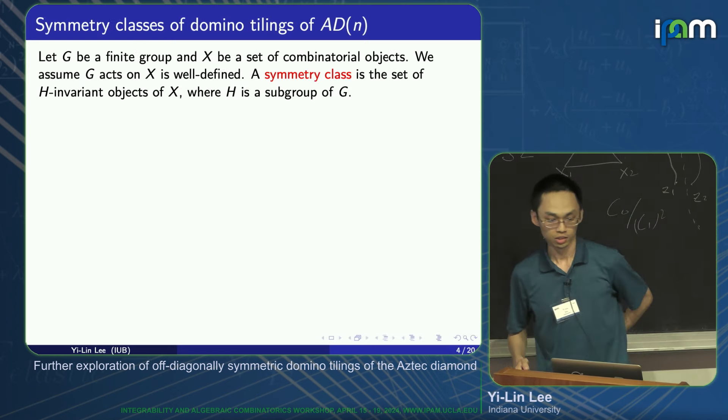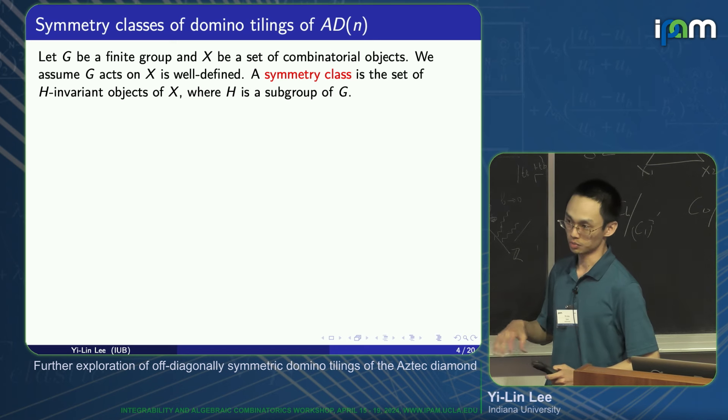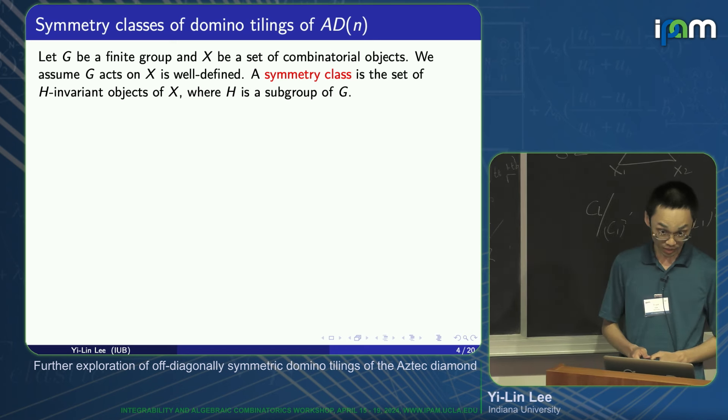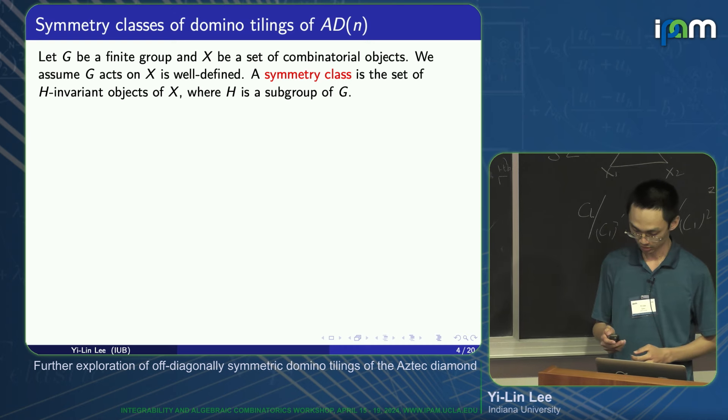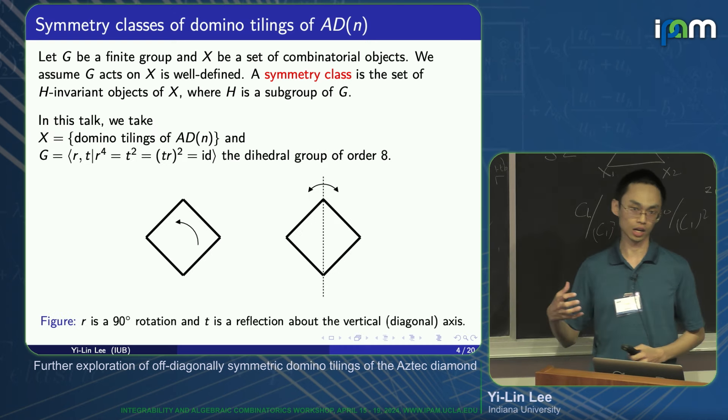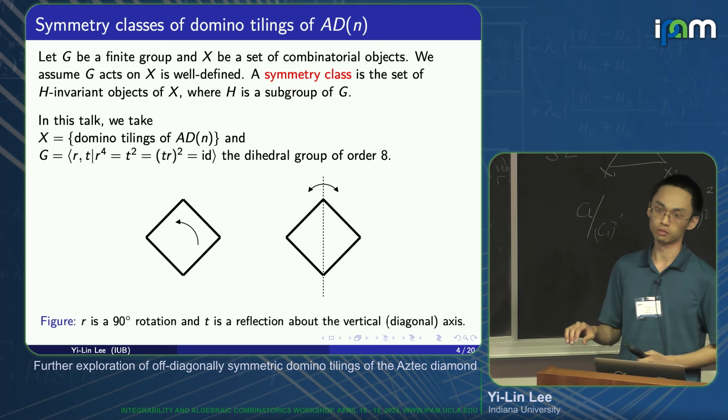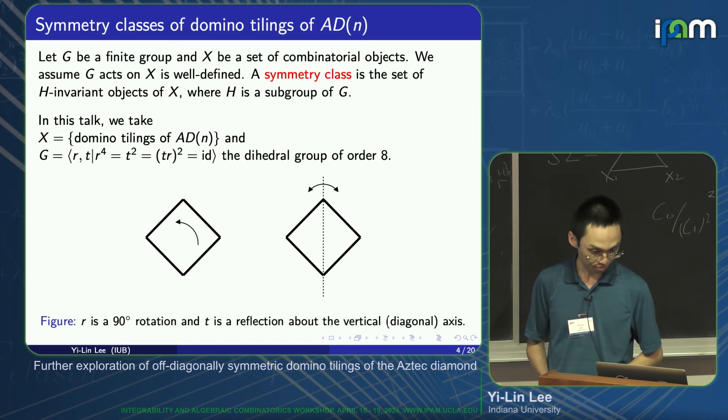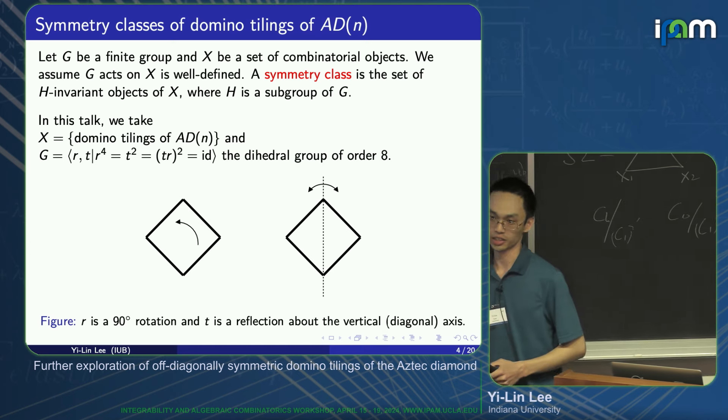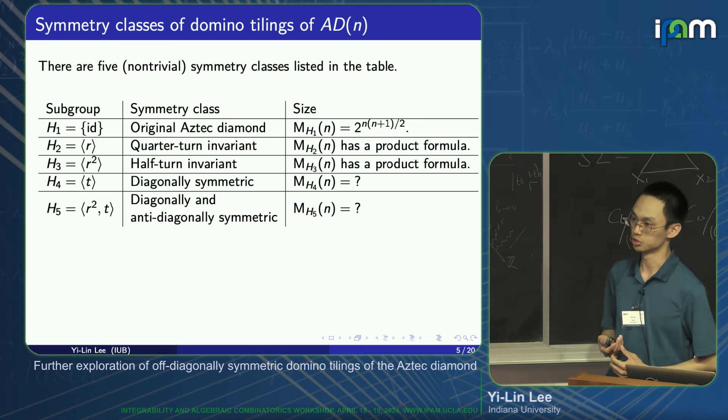Now let's put some symmetries on it. Suppose you have a finite group G, a set of combinatorial objects x, and suppose this group action G acts on x is well defined. A symmetry class is a set of H-invariant objects of x, where H is a subgroup of G. In particular, in this talk, we will take our objects to be domino tilings of Aztec diamond. And the group G is a dihedral group of order 8. You should think of it as a reflection and rotation of a square. It's an easy exercise to write down all the subgroups of dihedral group of order 8, and it turns out that this gives you five non-trivial symmetry classes of domino tilings of Aztec diamond.